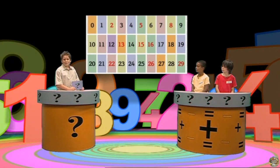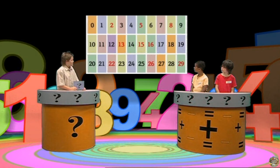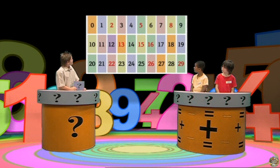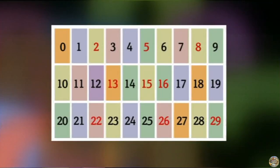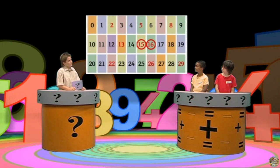Hello and welcome to the Maths Channel Quiz Show. Daniel, I'd like you to look at this number rectangle. Looking just at the red numbers, can you tell me a number that is one more than another number? Sixteen is one more than fifteen. Yes! But how did you know? Well, they're both next to each other on the same row. Yes — numbers on the same row have a difference of one.